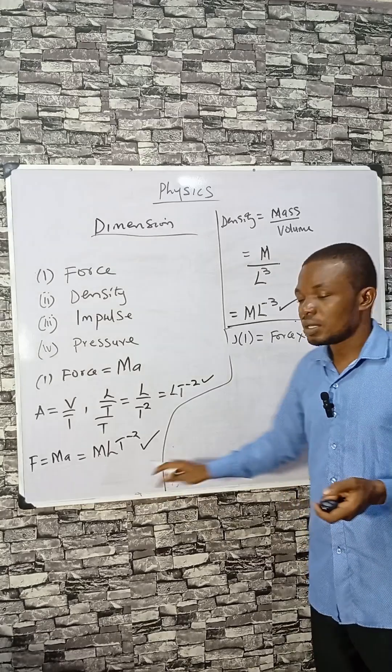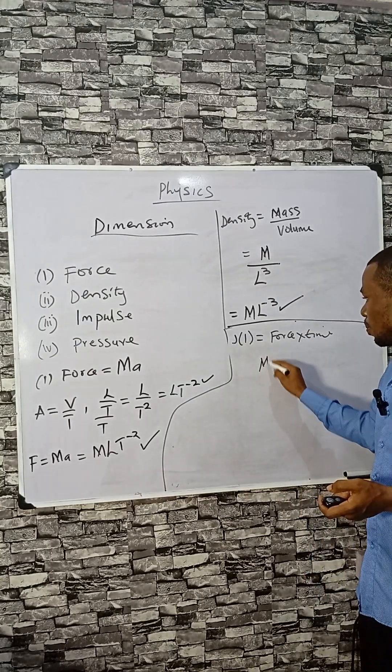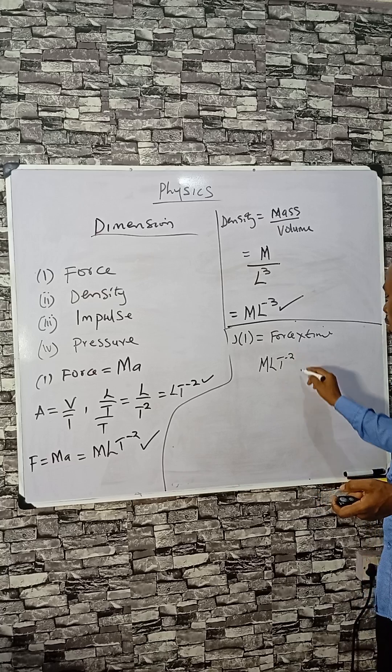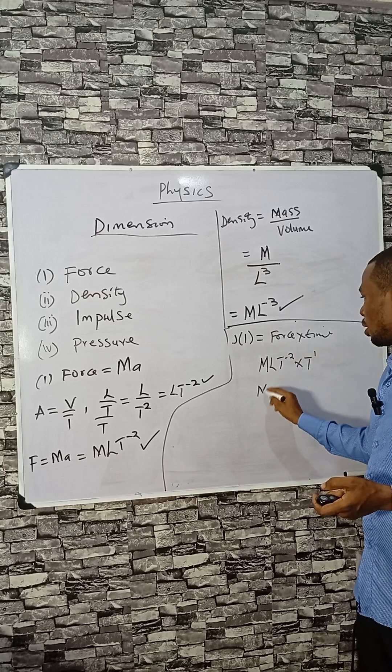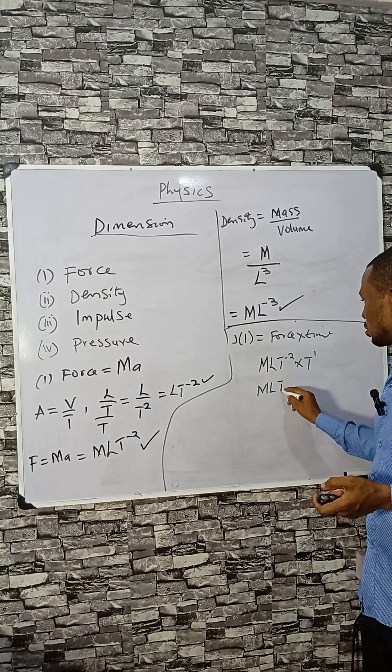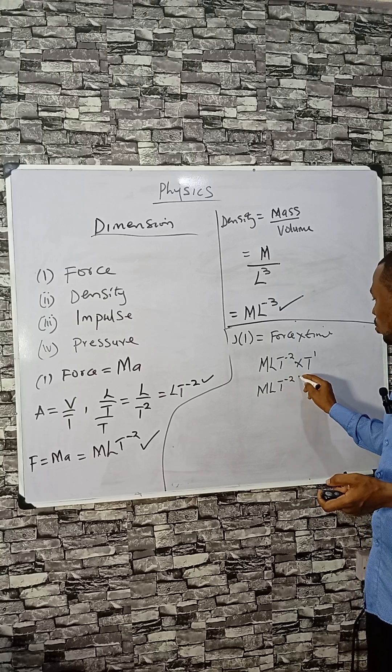Force is expressed as M L T minus two. And if you multiply with time, time is T to the one, so M L T minus two plus one.